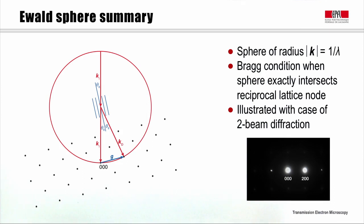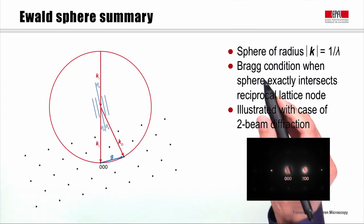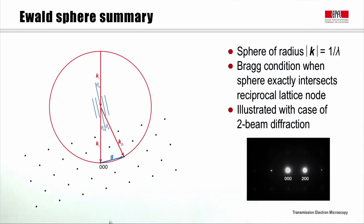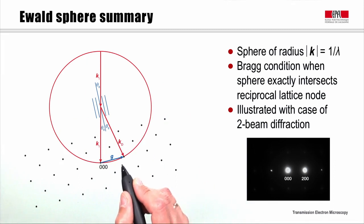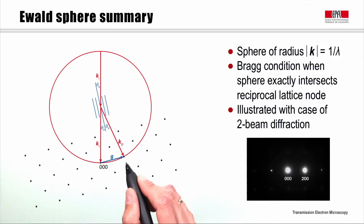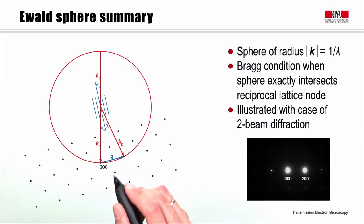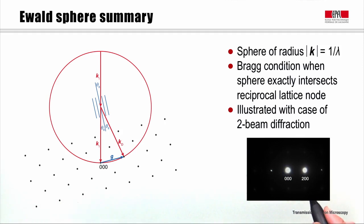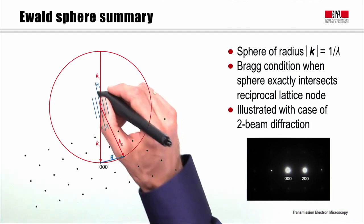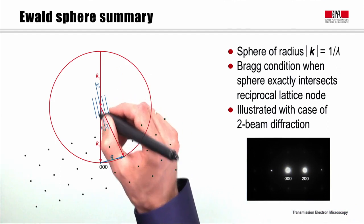To summarize, I have introduced the Ewald sphere — a sphere in reciprocal space with a radius of k equal to 1 over lambda. We have seen that when we interact this sphere with the reciprocal lattice, and when the surface of that sphere intersects exactly through the middle of a reciprocal lattice node, the plane corresponding to that node is at the exact Bragg condition and will diffract strongly. So far we have only looked at this in the case of 2-beam electron diffraction, where only one reciprocal lattice node is intersected by the Ewald sphere, and hence we only have strong diffraction on one plane, giving a diffraction pattern where the 200 plane is excited strongly, giving an intense diffraction spot. In this case that plane is inclined at an angle theta_B relative to the incident electron beam.